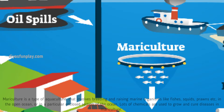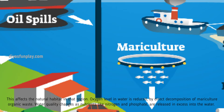Mariculture. Mariculture is a type of aquaculture that involves breeding and raising marine organisms like fishes, squids, prawns, etc. in the open ocean or in a particular enclosed section of the ocean. Lots of chemicals are used to grow and cure disease in mariculture. These chemicals affect the natural habitat in that region. Oxygen level in water is reduced by direct decomposition of mariculture organic waste. Water quality changes as nutrients like nitrogen and phosphate are released in excess into the water.